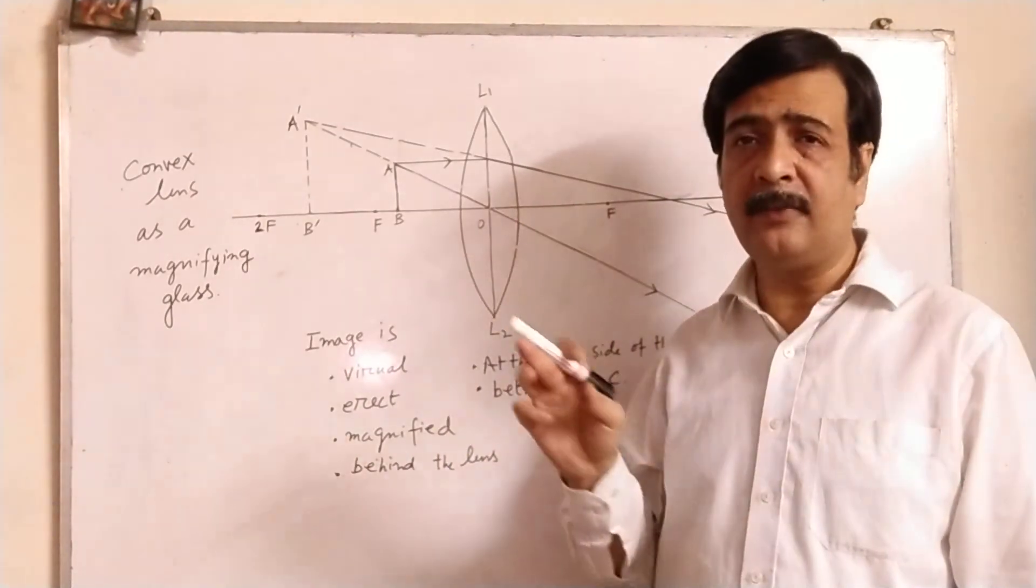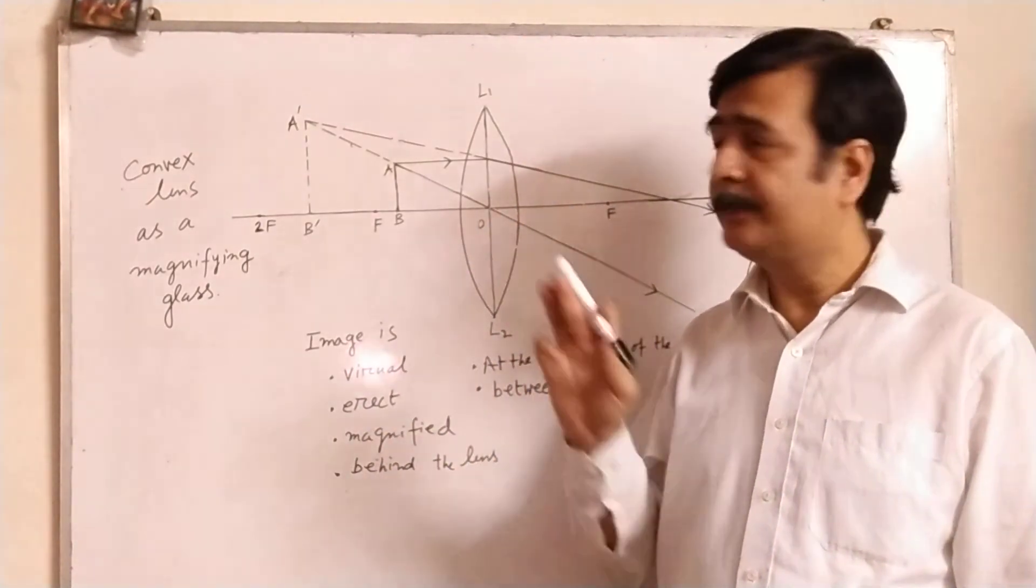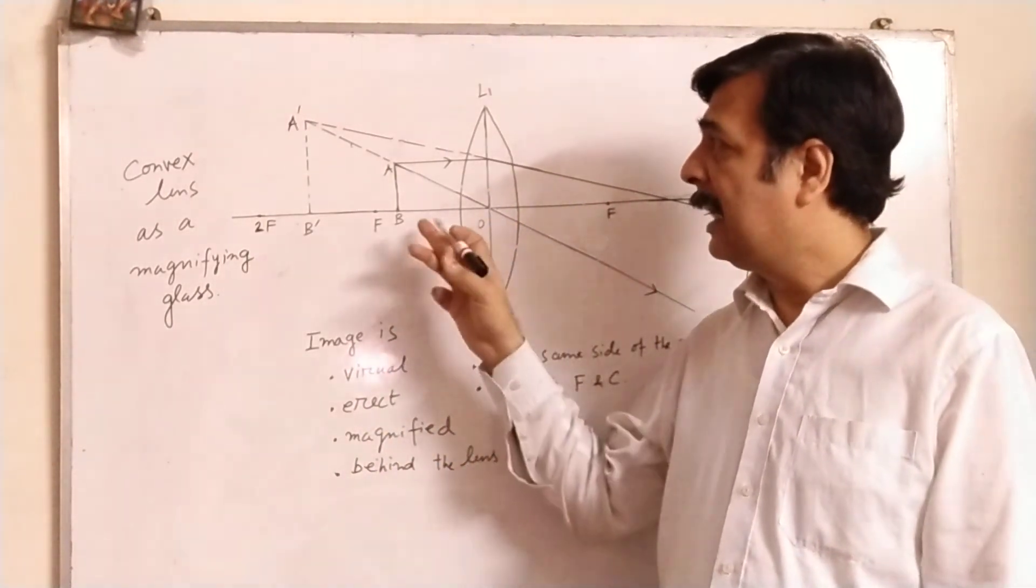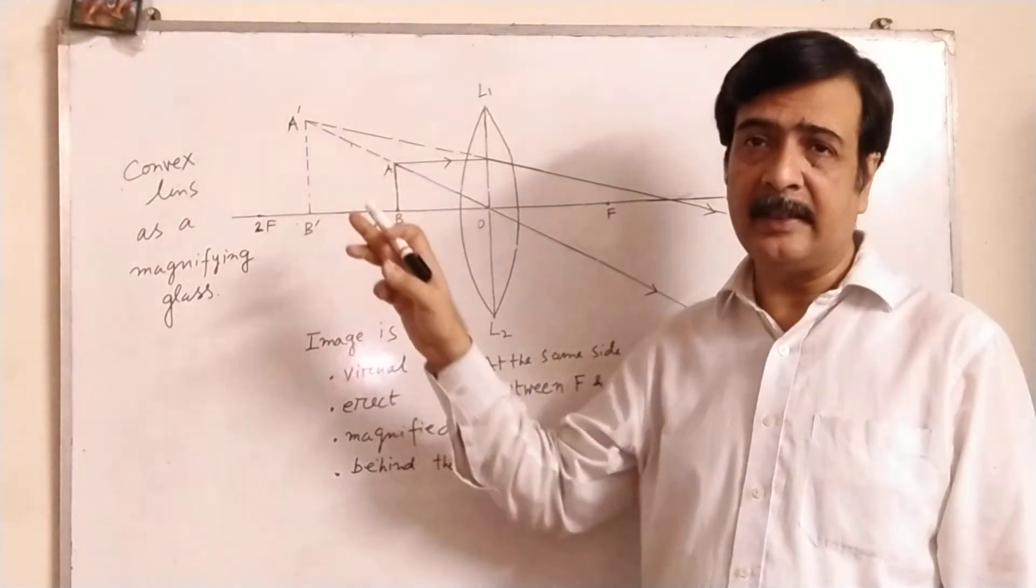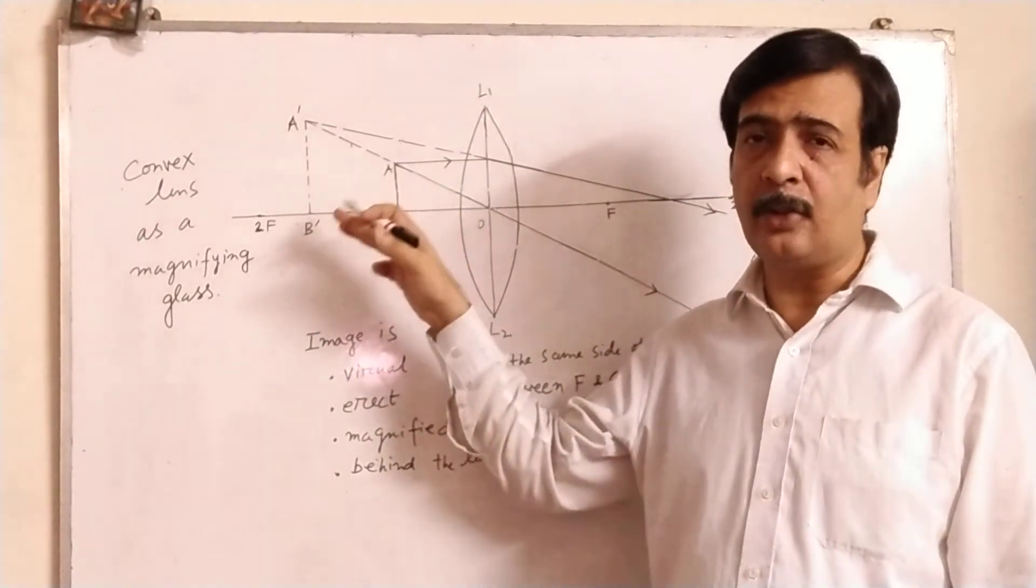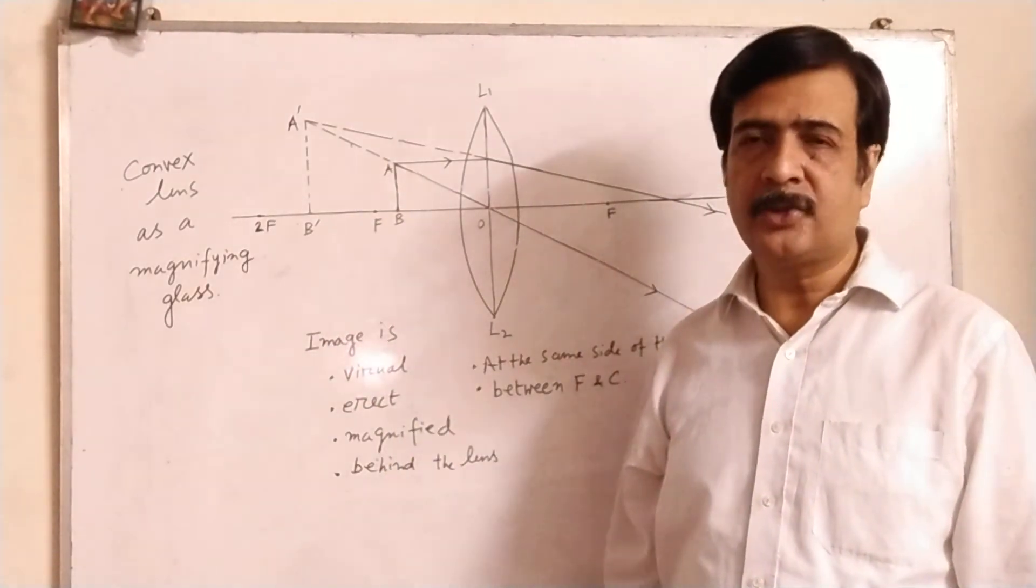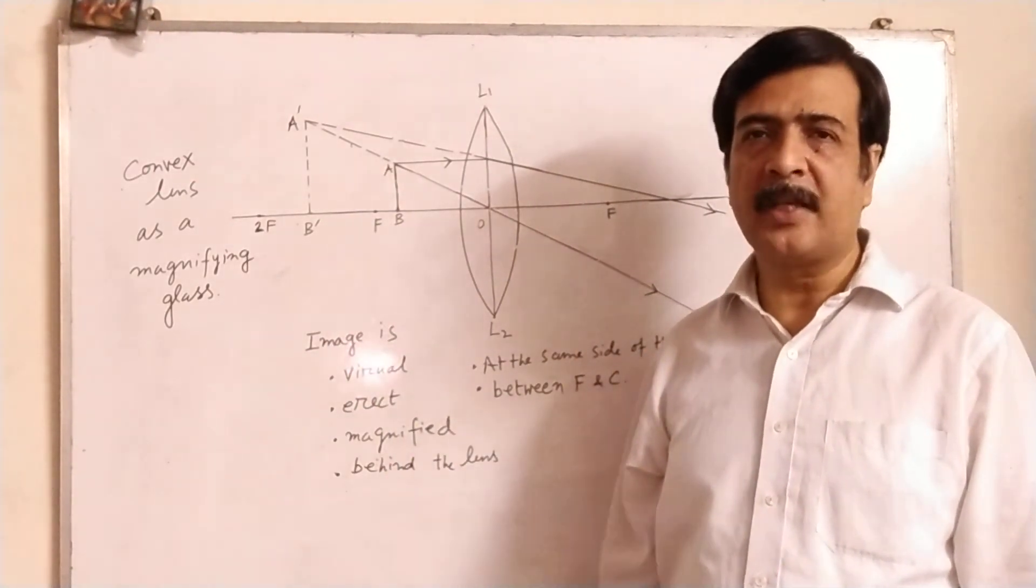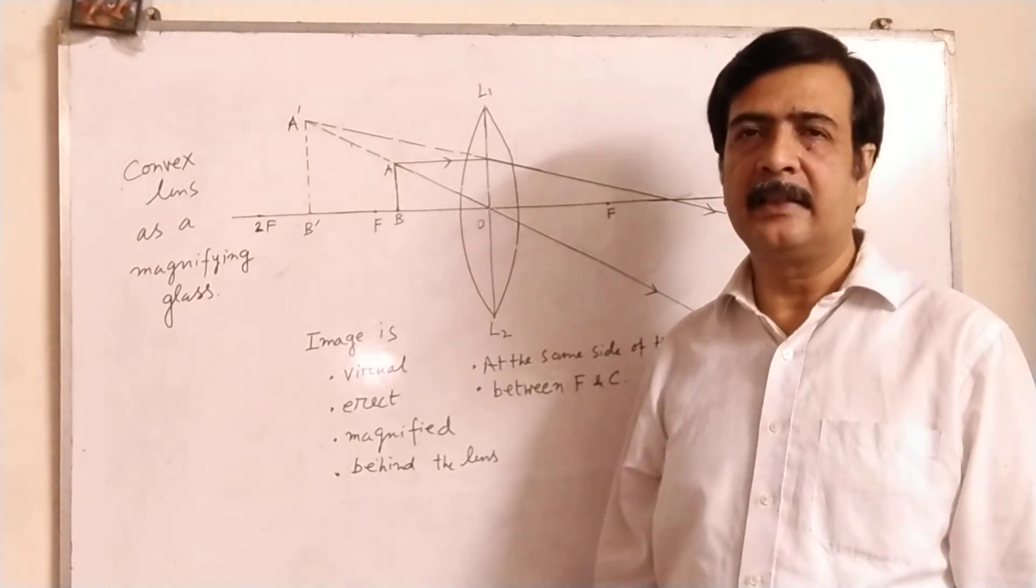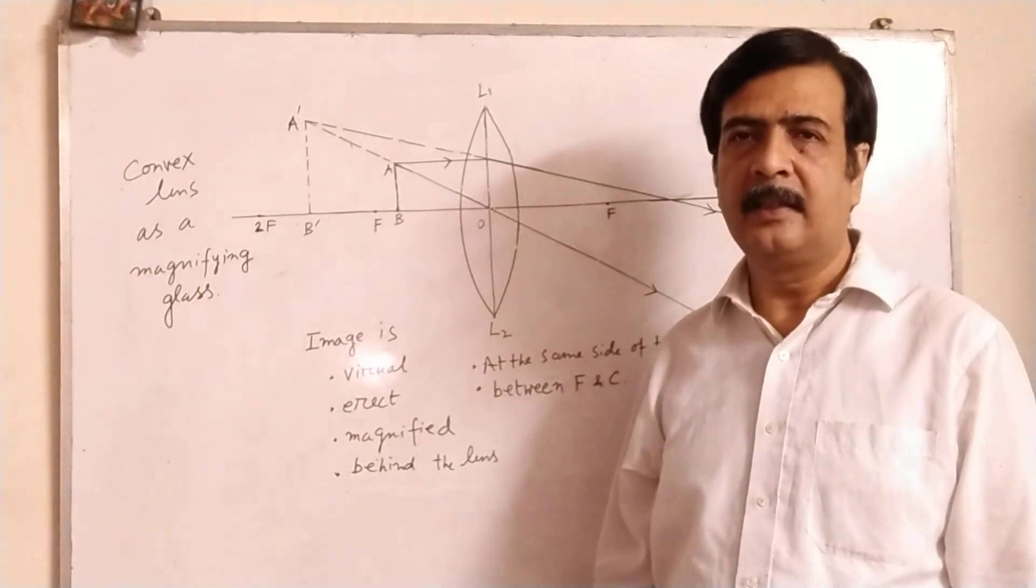Arrows are very important for the light optics, and dotted line wherever I have given, that you have to maintain that dotted line also. Okay, so you have understood. Try to subscribe my channel and give like wherever is possible. Thank you.